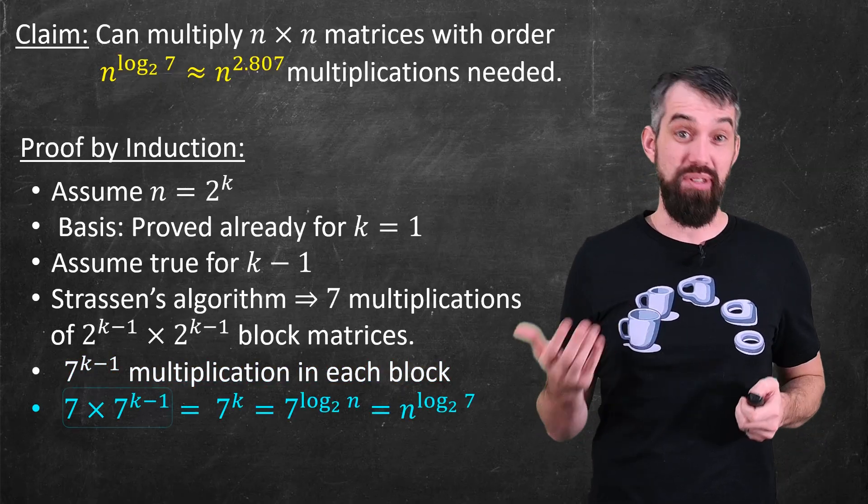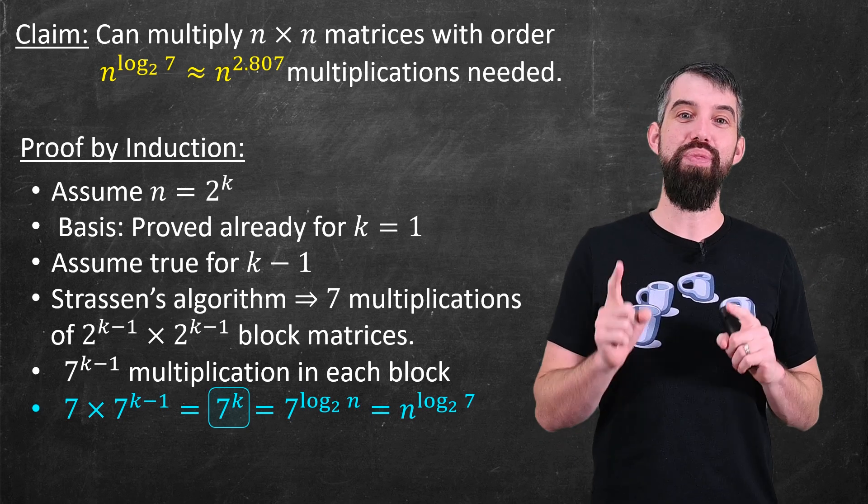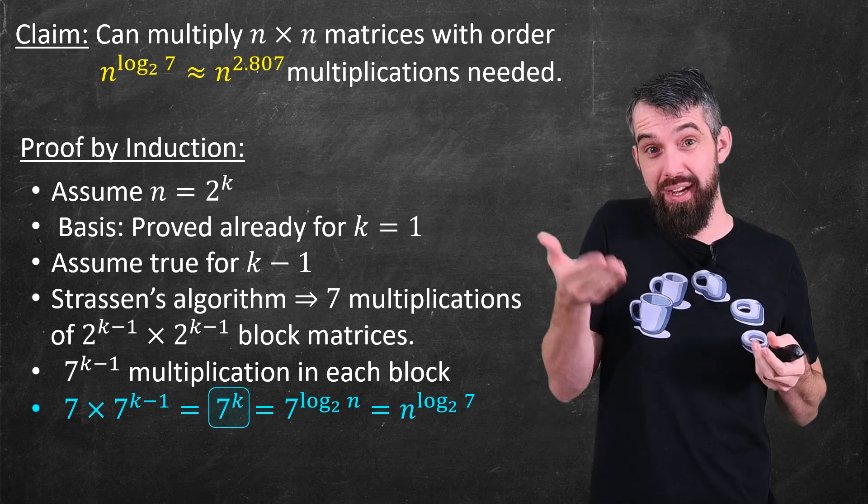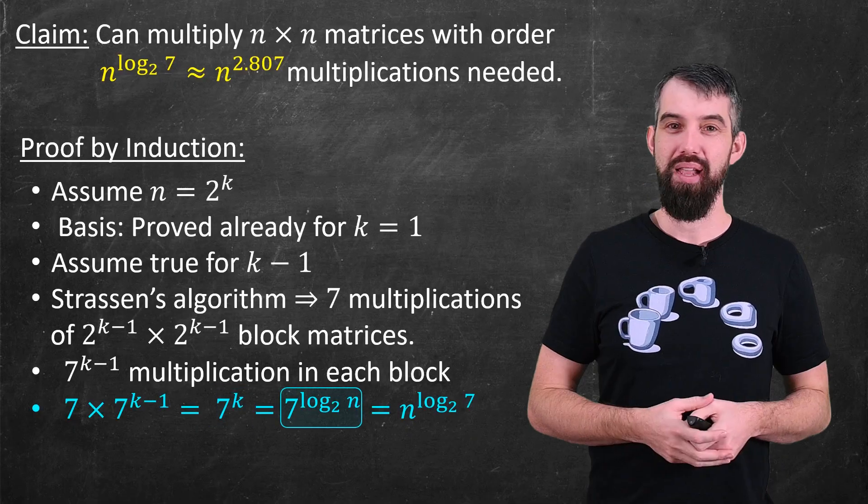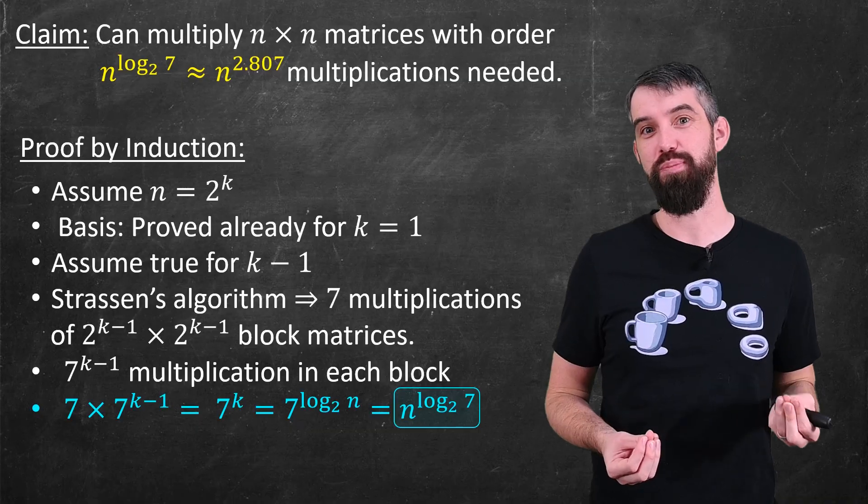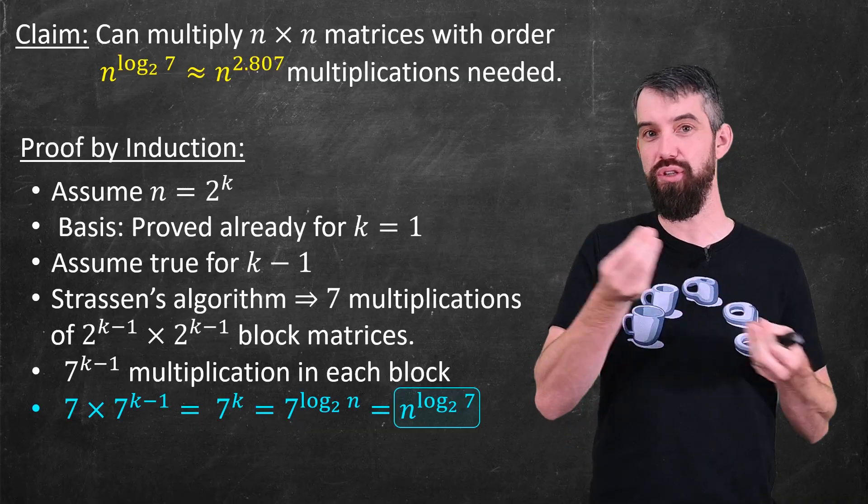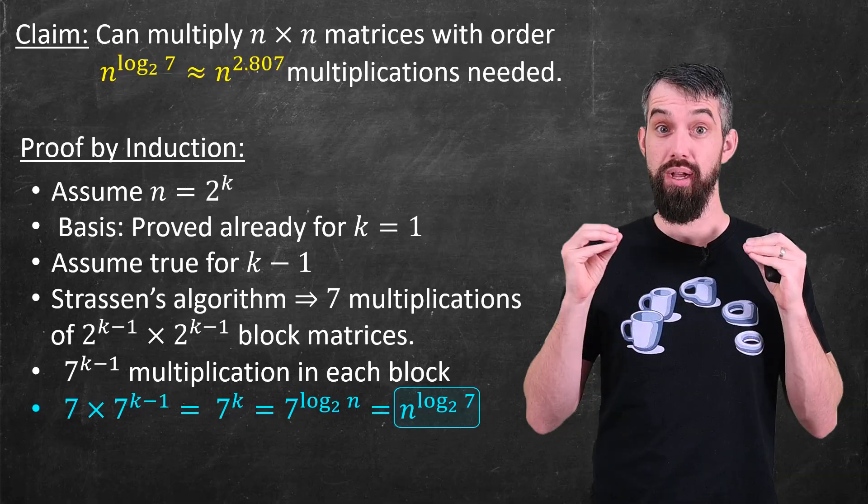And so, well, what do I get? 7 times 7 to the k minus 1, this is just the same thing as 7 to the k. Since I know that n is 2 to the k, I can take log base 2 of both sides and replace the k with log base 2 of n, and then the final step is just using some log rules where you can always take the base of an exponent and the argument side of the logarithm and you can swap those around. So that's what I've done to get n to the logarithm base 2 of 7.